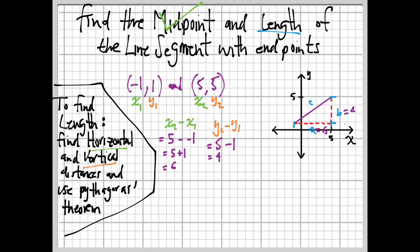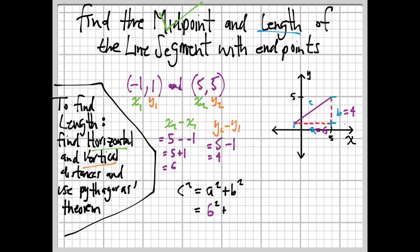Now we have our two lengths: the horizontal length a equals 6 and the vertical length b equals 4. We put those into Pythagoras' theorem: c squared equals a squared plus b squared. We plug in 6 for a and 4 for b. 6 squared is 36, 4 squared is 16, and we add them together to get 52.